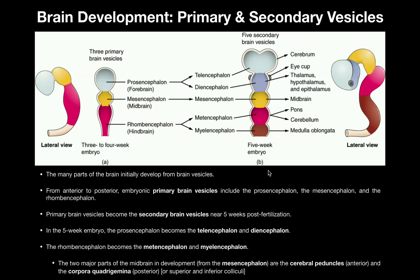If we fast forward one to two weeks into a five week embryo, what we see is that the prosencephalon and the rhombencephalon specifically have differentiated into two separate brain vesicles each, giving us a total of five secondary brain vesicles. The prosencephalon differentiates into the most anterior telencephalon, and then just posterior to that, the diencephalon. Notice the mesencephalon will grow but does not differentiate any further — it remains the mesencephalon in both primary and secondary brain vesicles. The rhombencephalon differentiates into the metencephalon, shown here in pink, and then the myelencephalon, which is the most posterior of all of these.